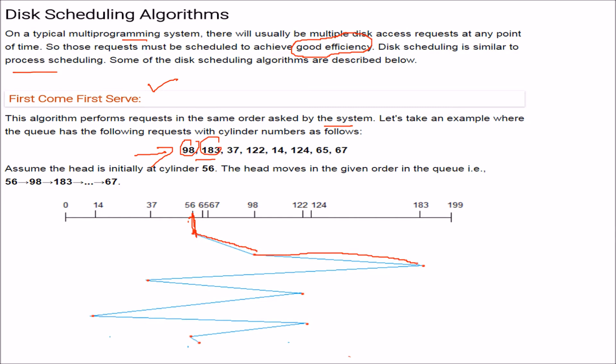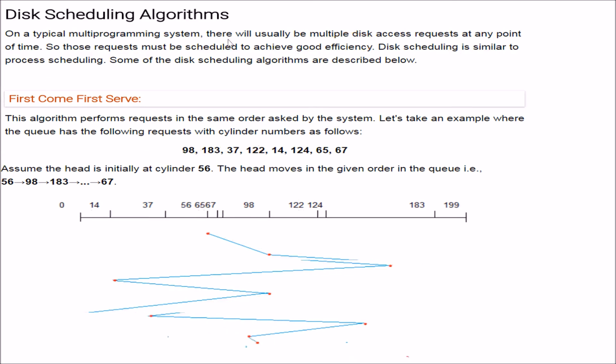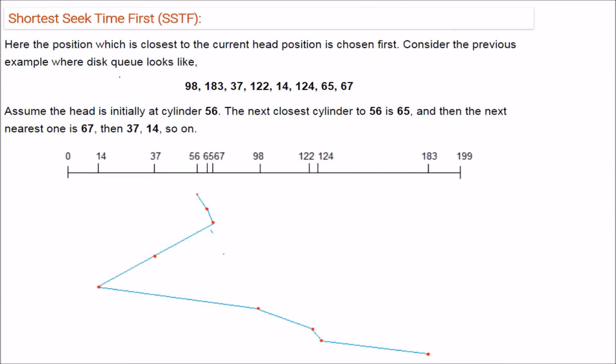It will go to 98. Then 183, it will go to 183. Then 37, it will come back to 37. Then 122, it will go to 122. Then 14, so it has to go back here, 14. Then 124, 124. And finally 65, and then 67. So this is how the head moves.